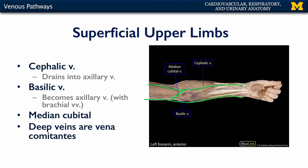As the cephalic vein continues, it will eventually drain into the axillary vein in the deltopectoral triangle, whereas the continuation of the basilic vein becomes the axillary vein when joined by the venae comitantes of the brachial artery. So laterally we have the cephalic, medially we have the basilic, and all of this drains into or becomes the axillary vein, which then becomes the subclavian vein.